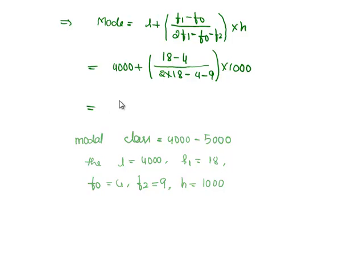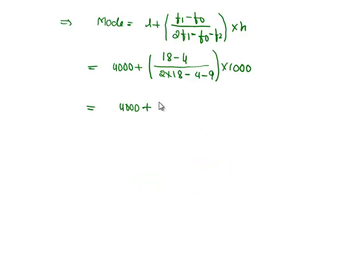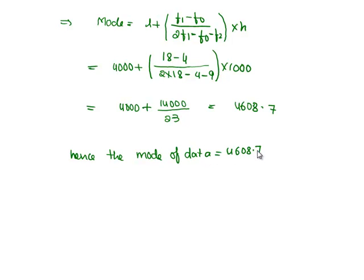Solving this, we get 4000 plus 14,000 by 23, it is 4,608.7. Hence the mode of the data is 4,608.7.